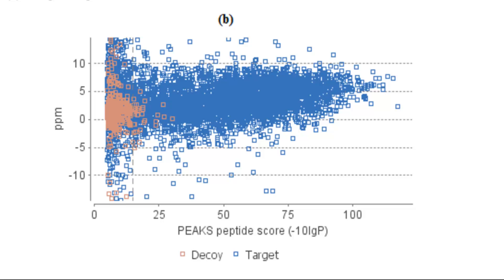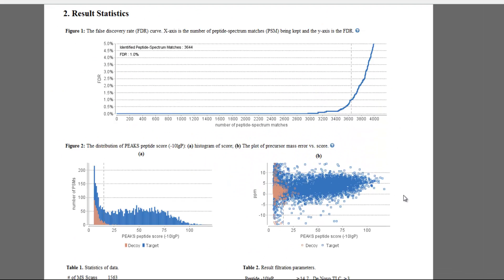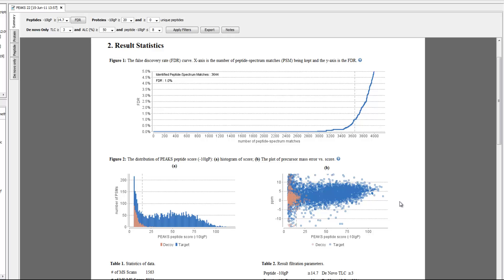Second, this scatter plot compares the precursor mass error with the peptide score. If you are using a high-resolution instrument, you should see that the error is small for the high-scoring peptides, and starts to scatter for peptides below the score threshold.